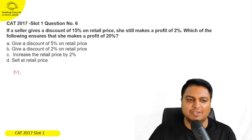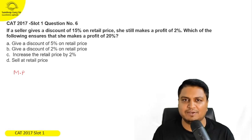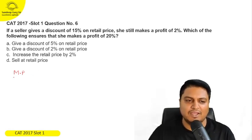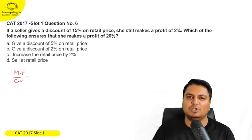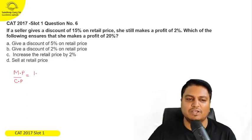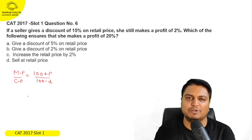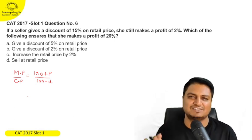MP upon CP. MP is nothing but the retail price which is marked price written on the product. And CP denotes cost price. This is equal to 100 plus P divided by 100 minus D. Here, P denotes profit percent and D denotes discount percent.